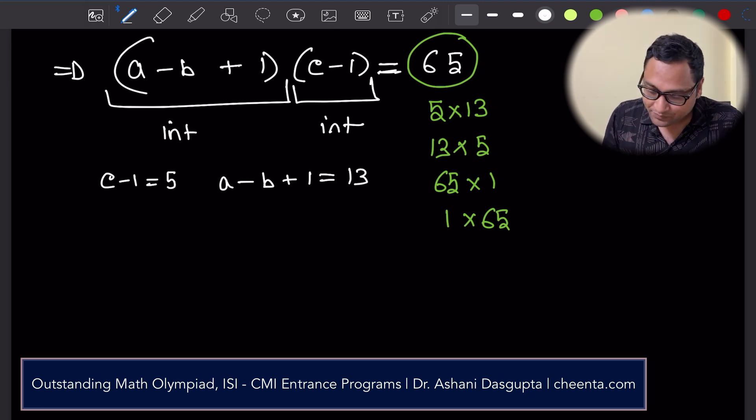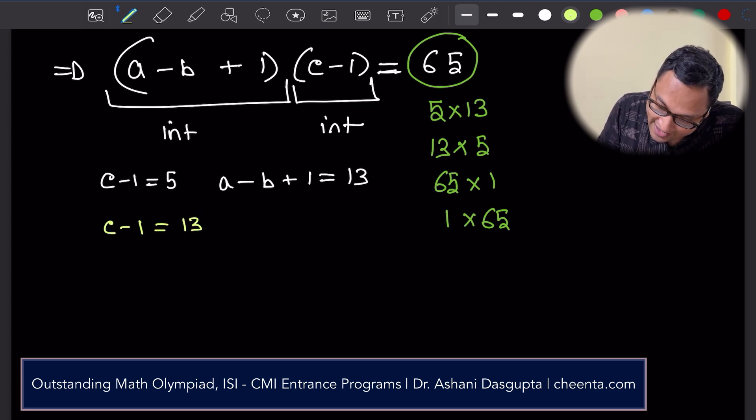There are few other possibilities as well. For example, c - 1 equals 13 and a - b + 1 equals 5.